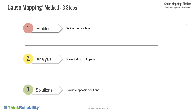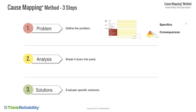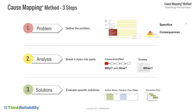Our cause mapping method has three basic steps: problem definition, where I identify specifics and consequences of the issue; the analysis, where you follow cause and effect and the chronology; and then solutions, where I identify action items to prevent recurrence.